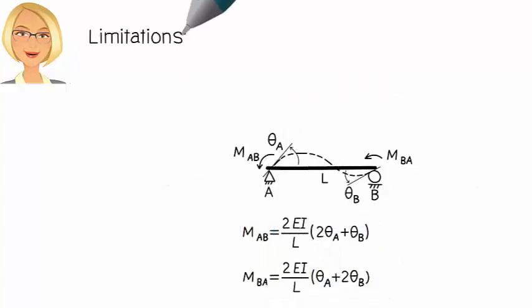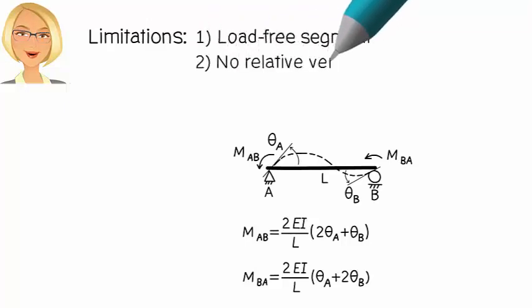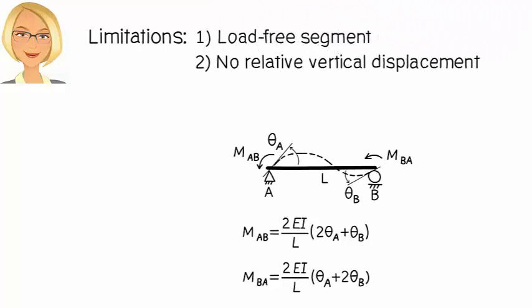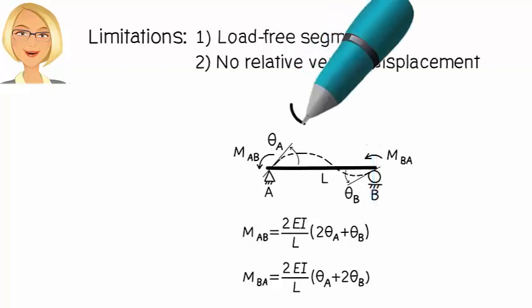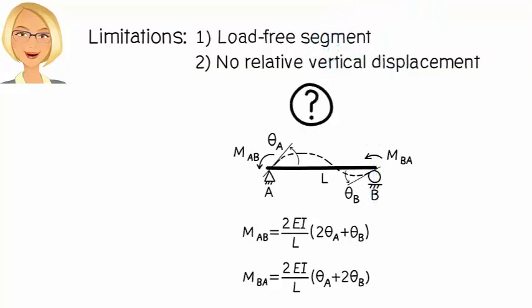One, the beam segment is assumed to be load-free. And two, there is no relative vertical displacement between the ends of the segment. That is, B does not move up or down relative to A. Why do we need to talk about this relative end displacement, you ask? I will explain shortly.